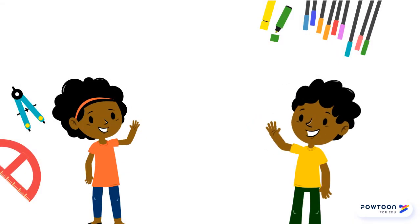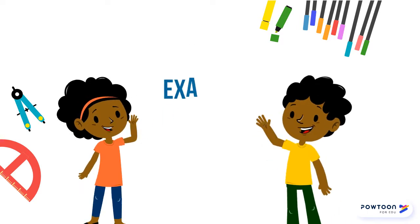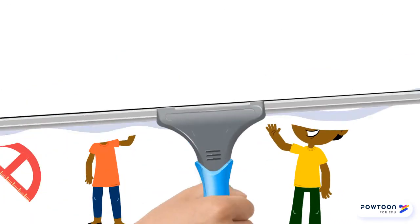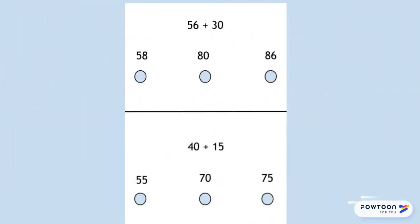Let's look at our first example. This is an example of a page you'd see on your computer for the MCF. As you can see, there are two problems on the page separated by a line and each problem has three answers you can choose from.